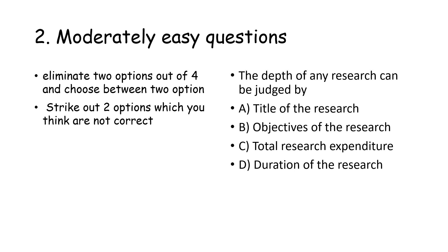For example, this particular question related to research aptitude had appeared in paper one of UGC net exam. The depth of any research can be judged by: A) Title of the research, B) Objectives of the research, C) Total research expenditure, and D) Duration of the research. Now, out of the four given options, you may strike out the third option, total research expenditure, and the fourth option, duration of the research, as both these options cannot be the probable elements that can determine the depth of the research.